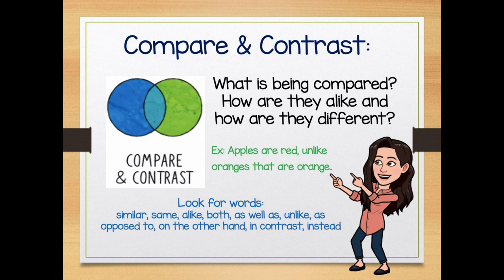Here are some words that you might see when an author uses compare and contrast. For comparing, they might use: similar, same, alike, both, as well as. For contrasting, they might use: unlike, as opposed to, on the other hand, in contrast, or instead. And I'm sure there are a few other ones authors might use too, so be on the lookout.